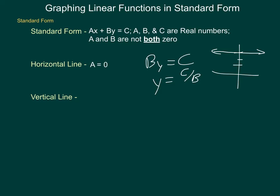Conversely, for a vertical line, we would have to have it such that B equaled zero, and then simply Ax would equal C. Solving for x, we have x equals C divided by A.